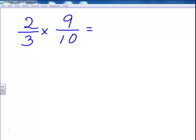As we discussed in the earlier video, it's pretty easy to multiply fractions. All you have to do is multiply the numerators together. So for this problem, 2 times 9 is 18, and 3 times 10 is 30.